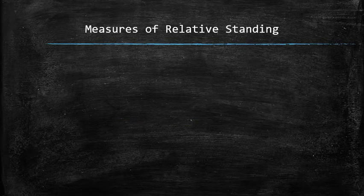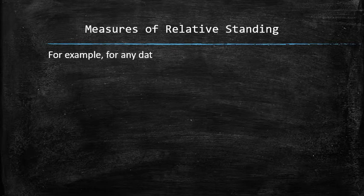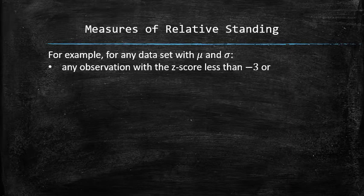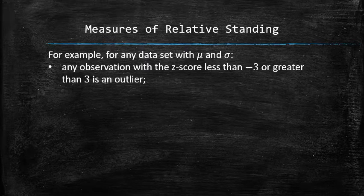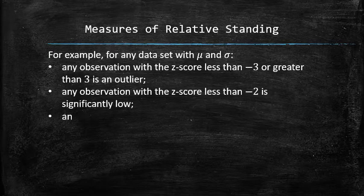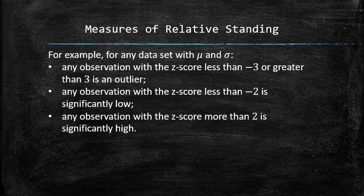One way to improve our interpretation of z-scores is to rephrase the rules from the previous section using z-score language. For any data set with mean mu and standard deviation sigma, any observation with a z-score less than negative 3 or greater than 3 is an outlier — this is the 3 standard deviation rule. Also, any observation with a z-score less than negative 2 is significantly low, and any observation with a z-score more than positive 2 is significantly high. These are alternative definitions of significant observations.